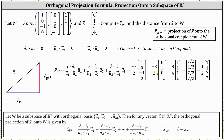Simplifying, the orthogonal projection of vector x onto W is equal to the vector [1/2, 1/2, 7/2, 7/2], or if we factor out one half, we have (1/2) times the vector [1, 1, 7, 7].